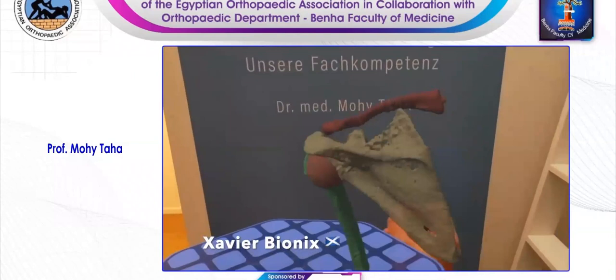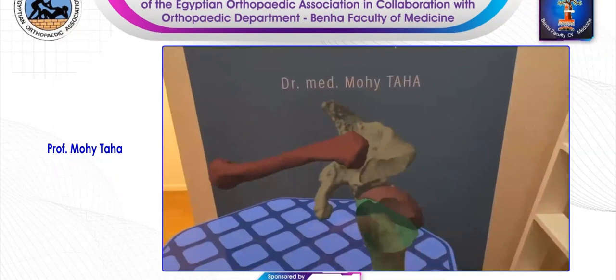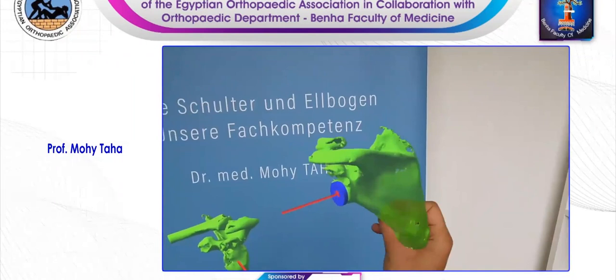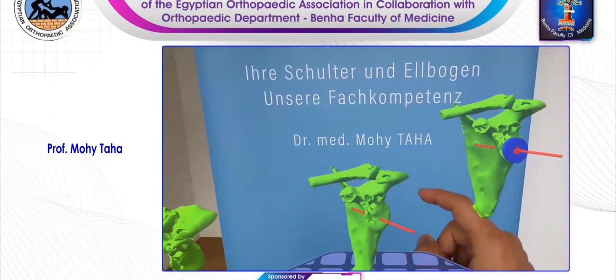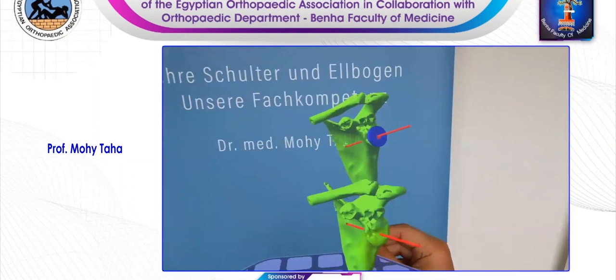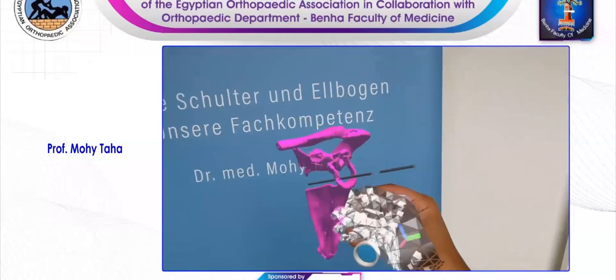Here we could use mixed reality to view the current situation with the pyrocarbon hemiarthroplasty from every side — you can turn it around. Here we view the preoperative planning, also using HoloLens and Mesh app to turn it around. Here you see some artifacts produced during the segmentation due to the hemiarthroplasty within the CT. Here we're using another app to view a 3D hologram, subtracting the glenoid and concentrating on the K wire. You can also turn it in every direction.